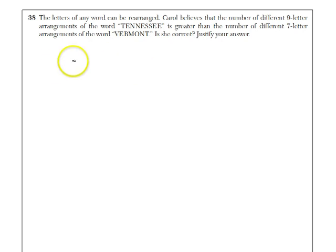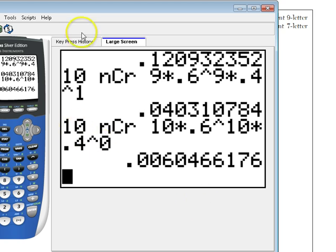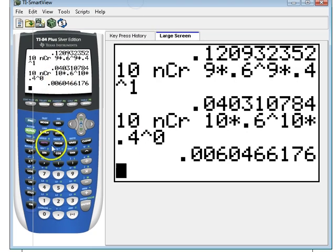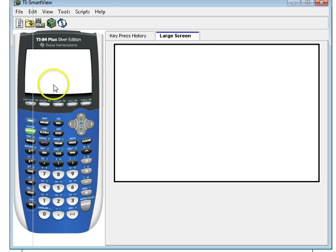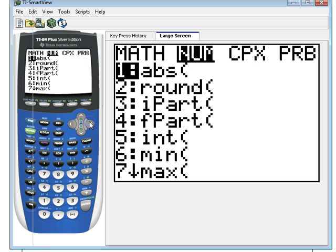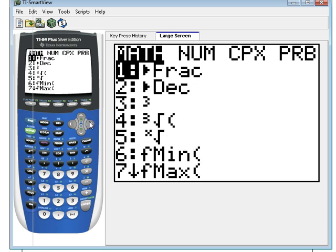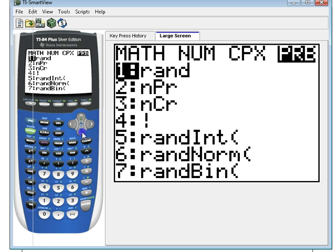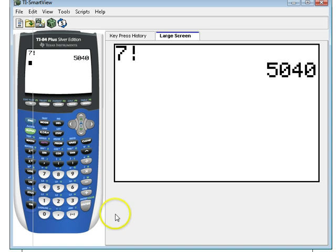So if you take the word Vermont, it's got seven letters. If there's no repeated letters, it's seven factorial. Seven factorial is just seven times six times five times four times three times two times one, or I could actually use the factorial commands here. 5040.